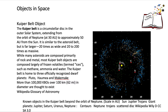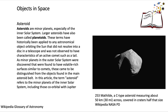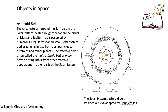Kuiper belt objects are found in the outer solar system, extending beyond the solar system but not as far out as the Oort cloud. Asteroids are found in the solar system between Mars and Jupiter and vary in size from a piece of dust up to a planetoid several kilometres in diameter. The asteroid belt is a collection of asteroids orbiting between Mars and Jupiter, and near Jupiter's orbit you can also see the Trojan asteroids in the diagram.